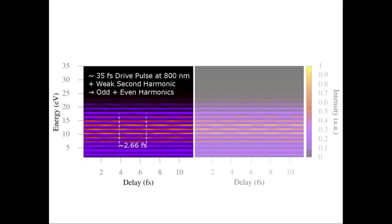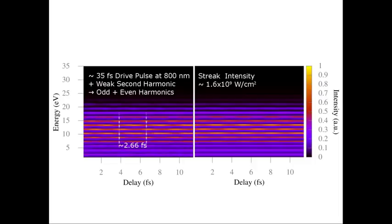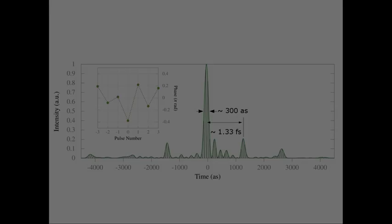Finally, we use our new algorithm with experimental data. The experimental spectrogram was fit using the VTGPA indicating a peak streak intensity of around 10 to the 9 watts per centimeter squared, and EUV pulses having a duration of roughly 300 attoseconds.